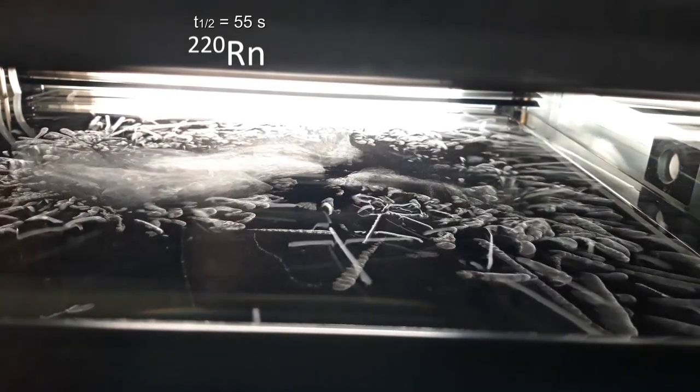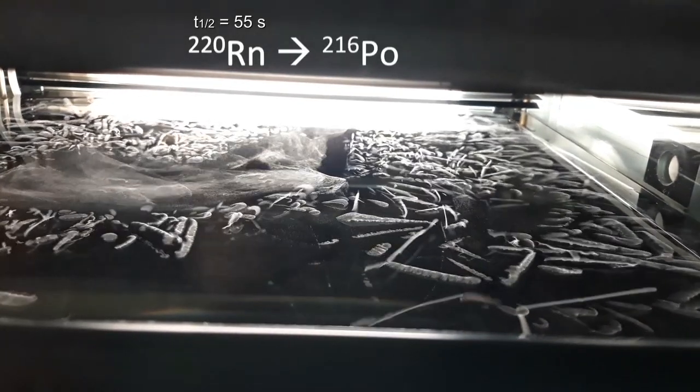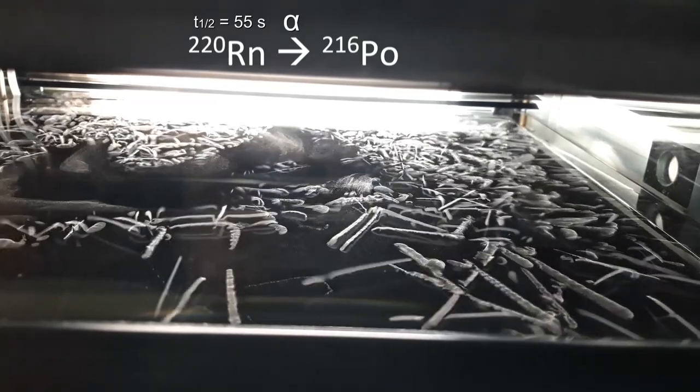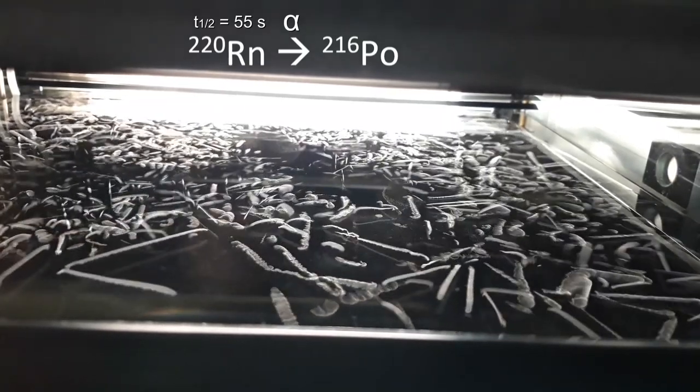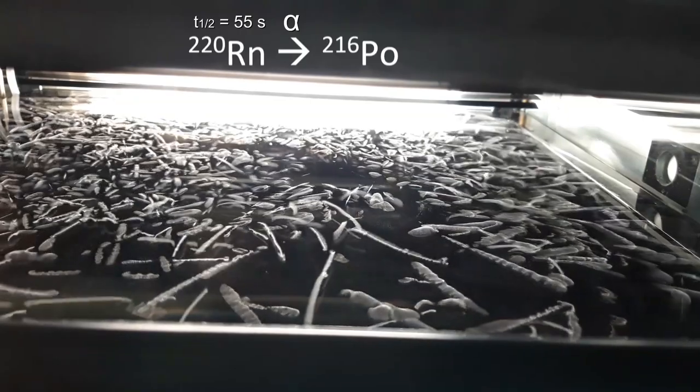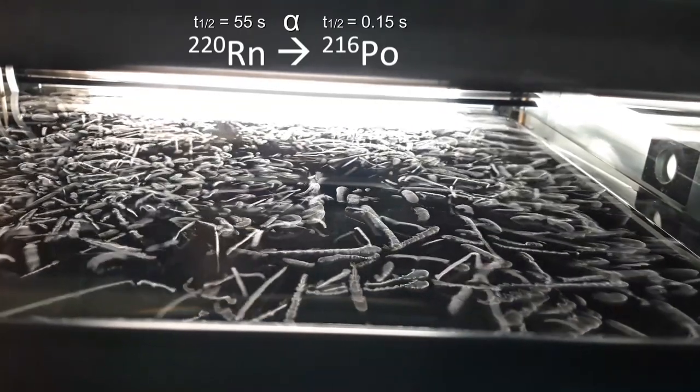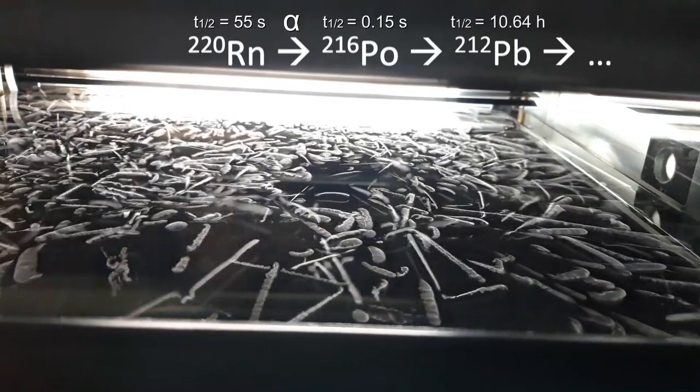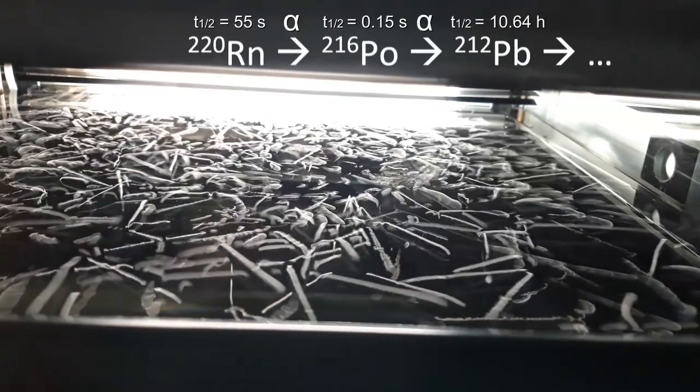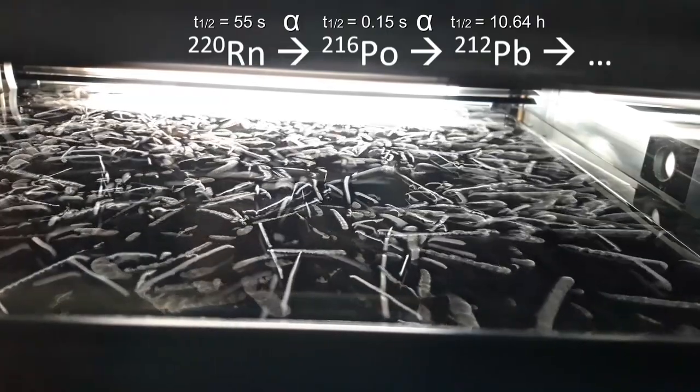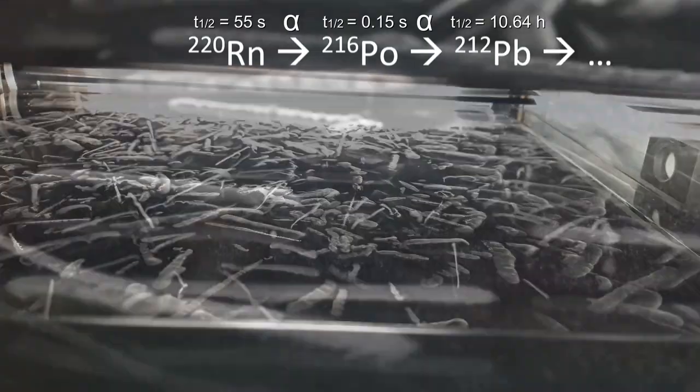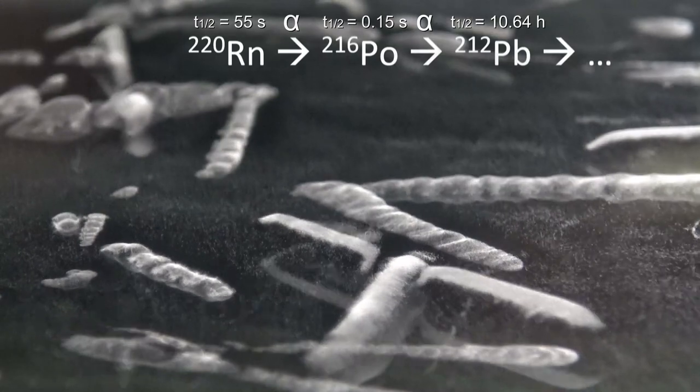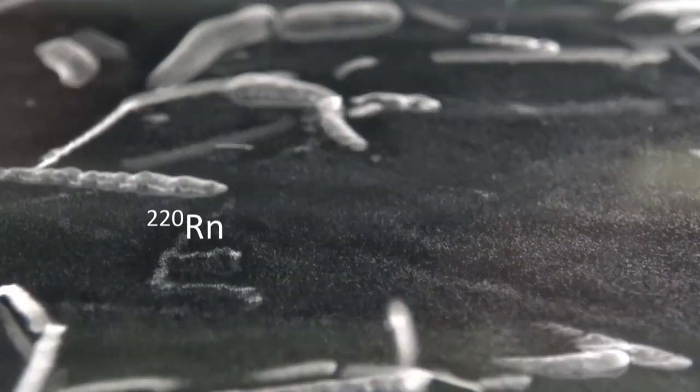An interesting sample is radon-220. It has a half-life of 55 seconds and decays into polonium-216 under emission of an alpha particle. The polonium-216 only has a half-life of 0.15 seconds and decays quickly to form lead-212 with a longer half-life under emission of an alpha particle. This is why V-shaped patterns are formed in the cloud chamber which are characteristic for radon-220.